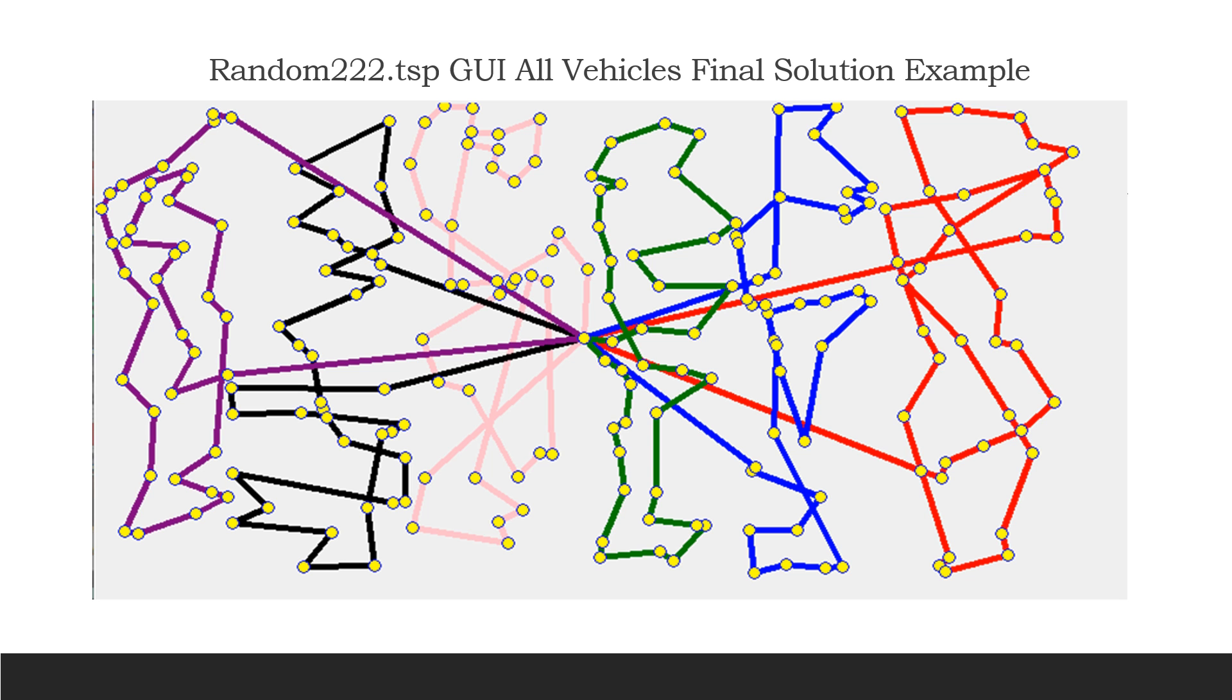On the next slide, you can see what they all look like put together. This is what it will give for the vehicle routing problem solution. You can see each of these from the last slide are now put into one big graph and color coded.